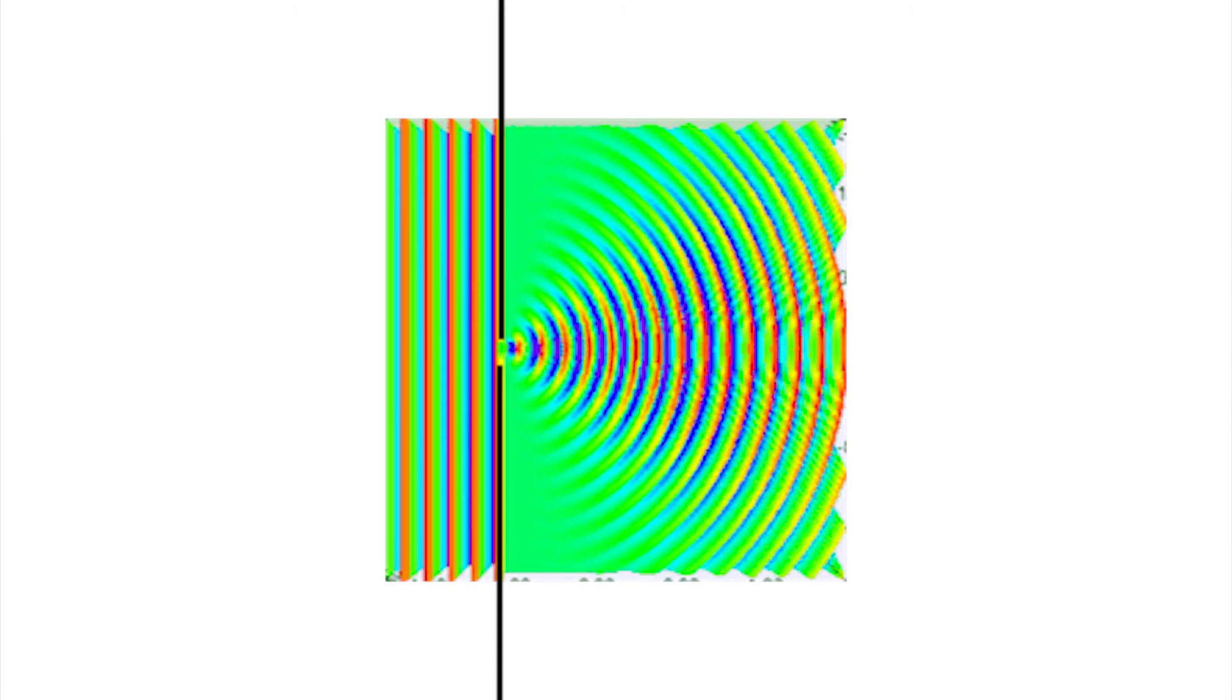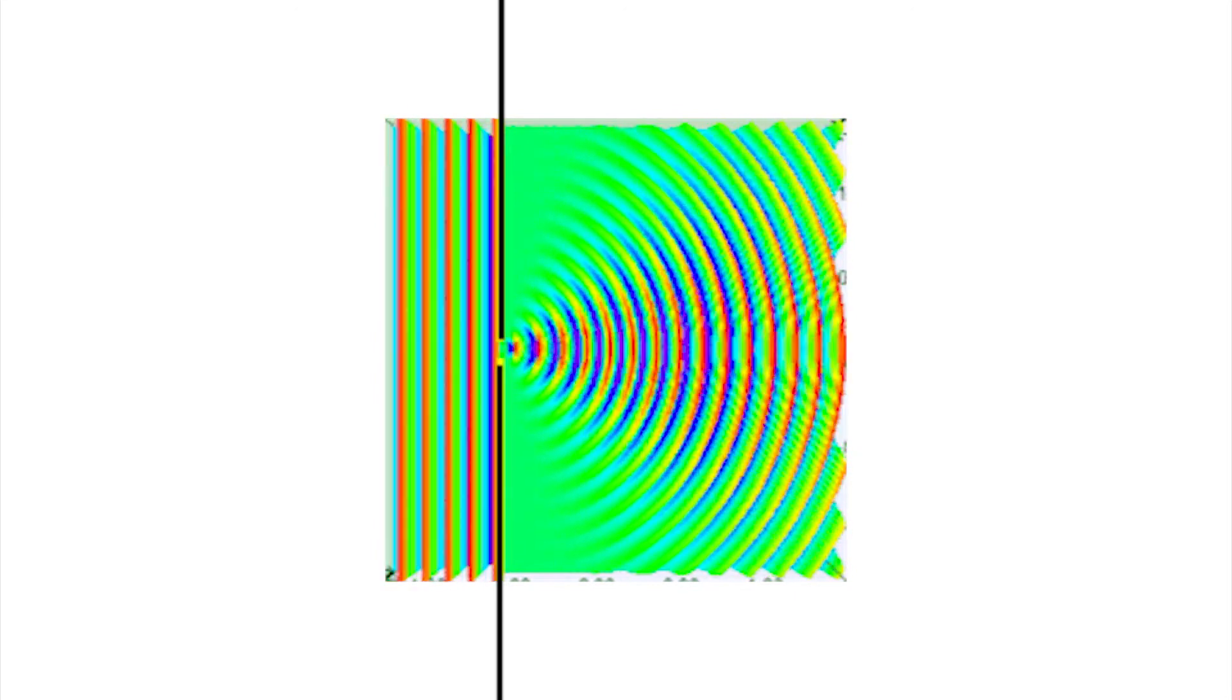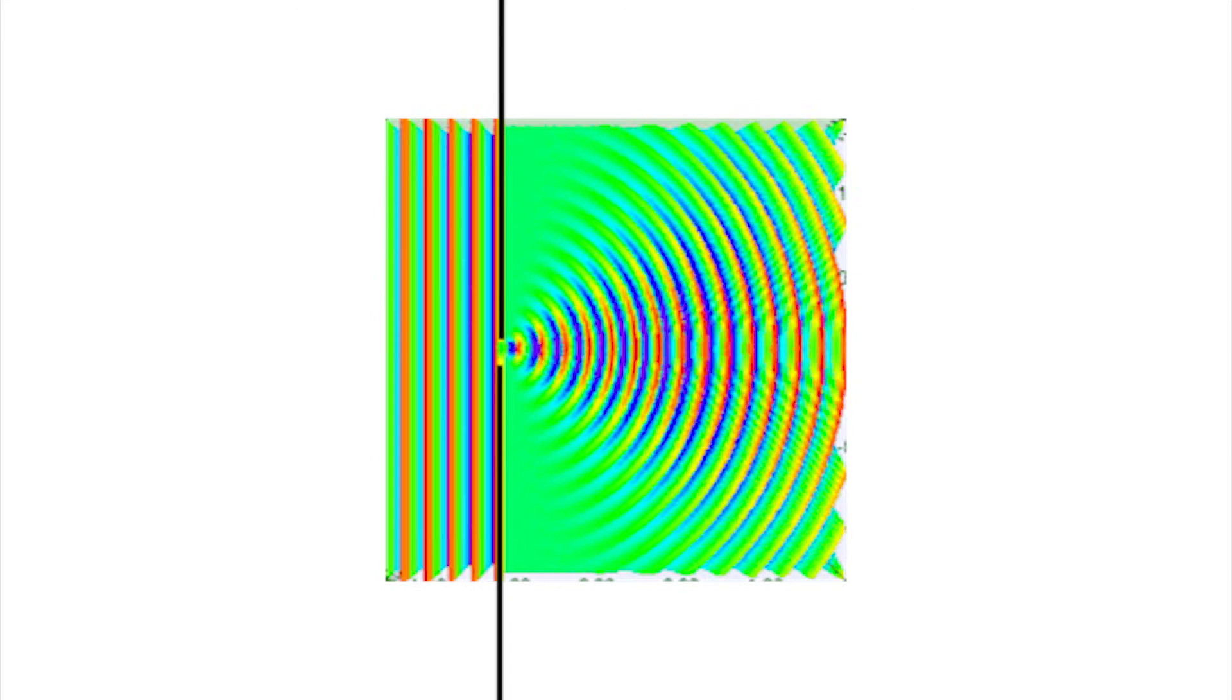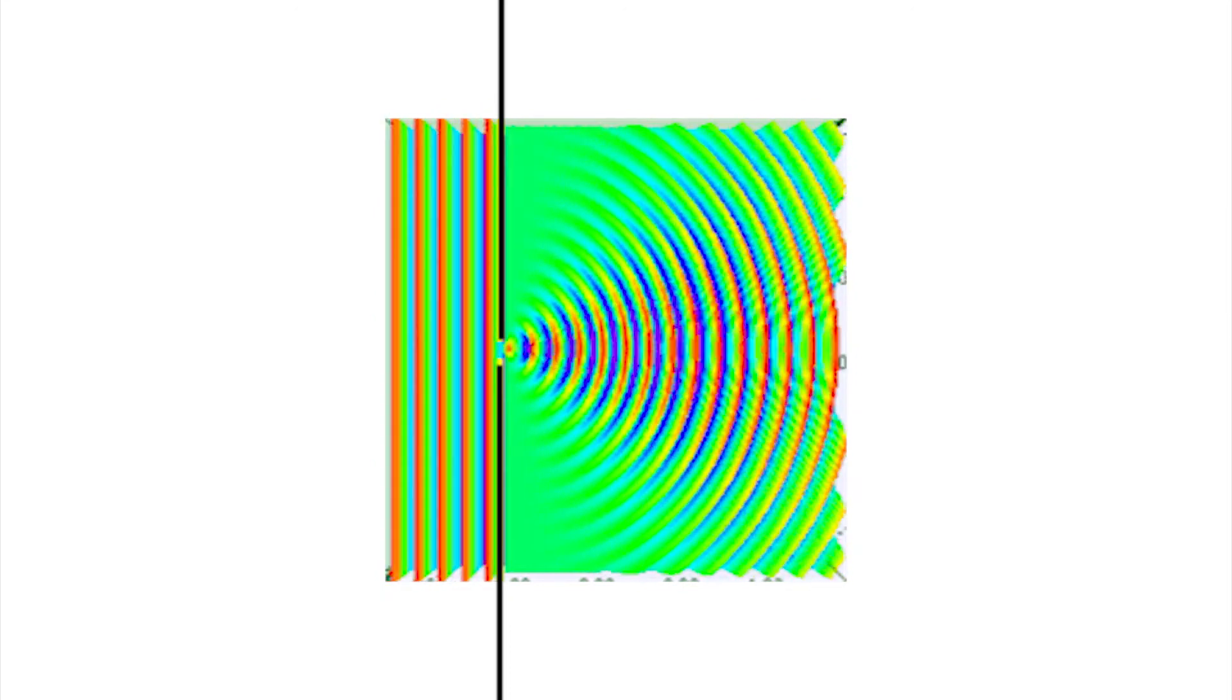Now watch this graphic as a wave approaches a single slot. The wave passes through the slot but rather than just carry on spreads out. The amount of spreading is due to the ratio of the size of the slot and the wavelength of the signal. This is diffraction.